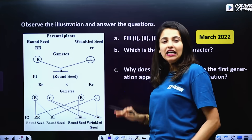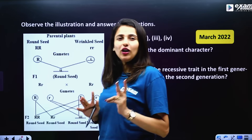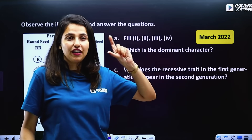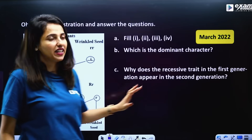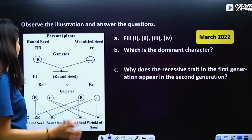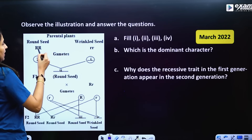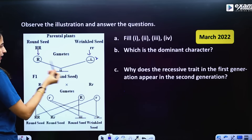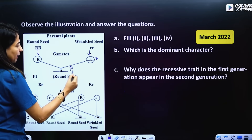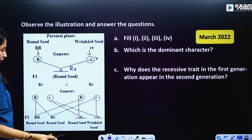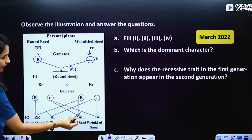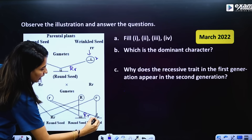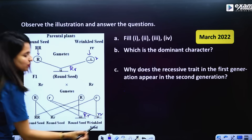This is a monohybrid and dihybrid cross. This is the F1 generation. Capital R and small r — the cross gives capital R small r and small r small r.